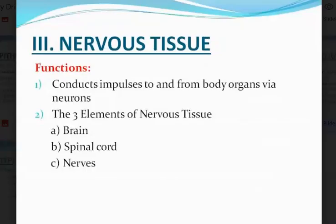And then we have nervous tissue. Nervous tissue conducts impulses to and from body organs via neurons. Neurons form the basic unit of the nervous system. The three elements of nervous tissue are the brain, spinal cord, and nerves.